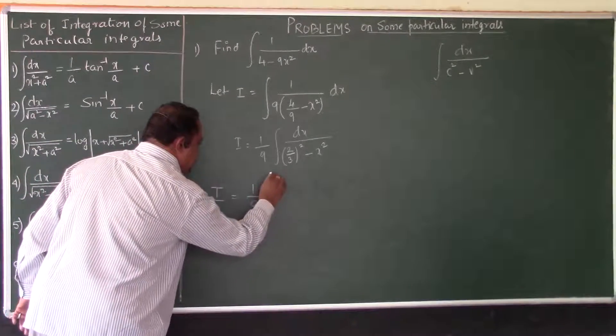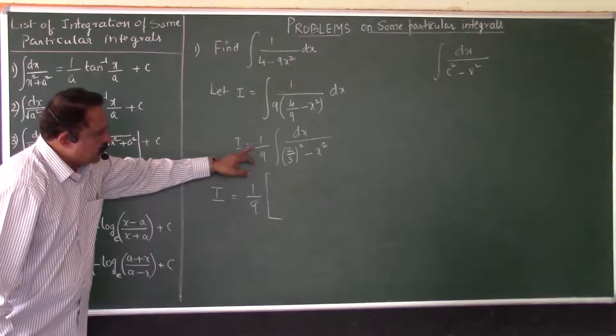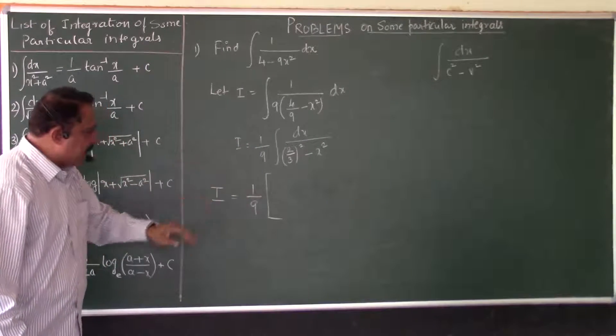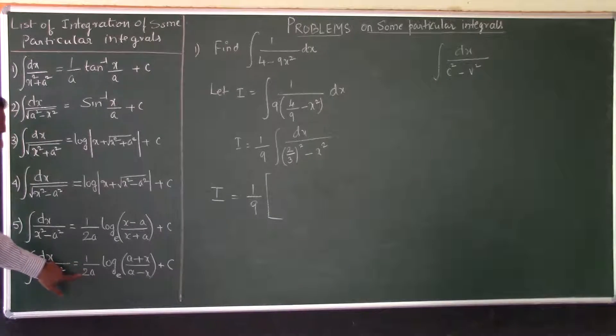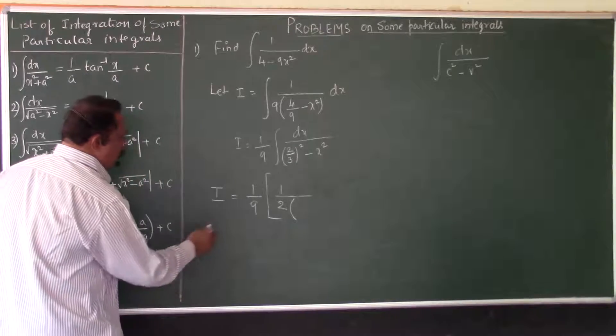This 1 by 9 is the starting coefficient that we should write. Then answer begins with 1 by 2A. 1 over 2 into A. What is the value of A? 2 by 3.